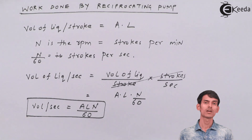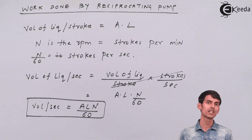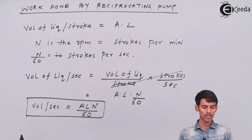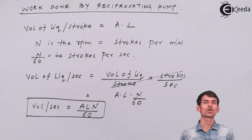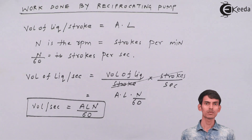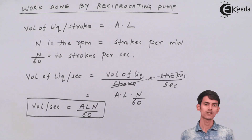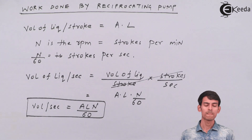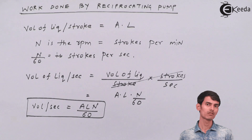So the volume of liquid delivered per second is A × L × N/60, where A is the cross-sectional area of the piston, L is the stroke length, and N is the RPM. This gives you the volume delivered per second.